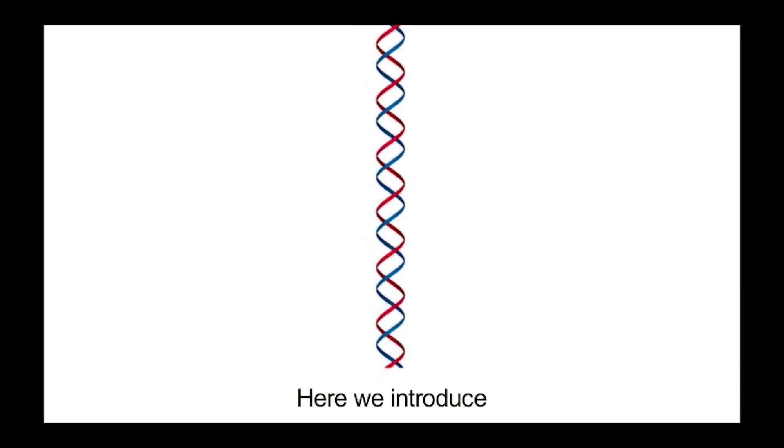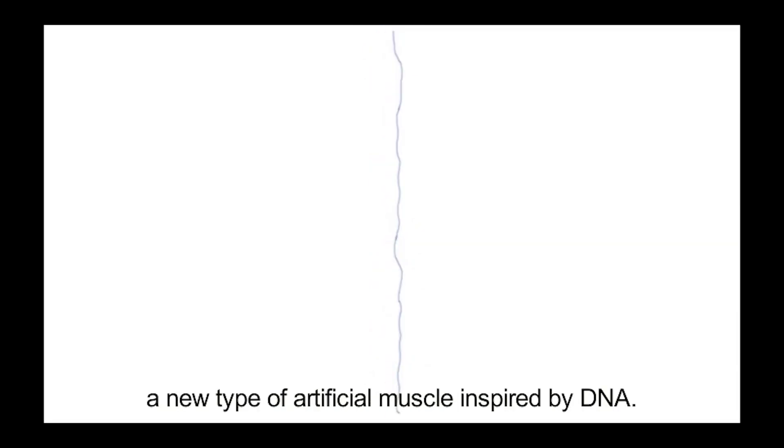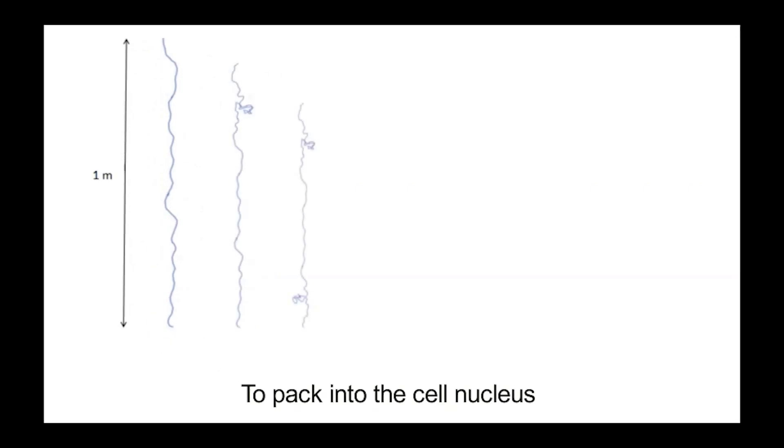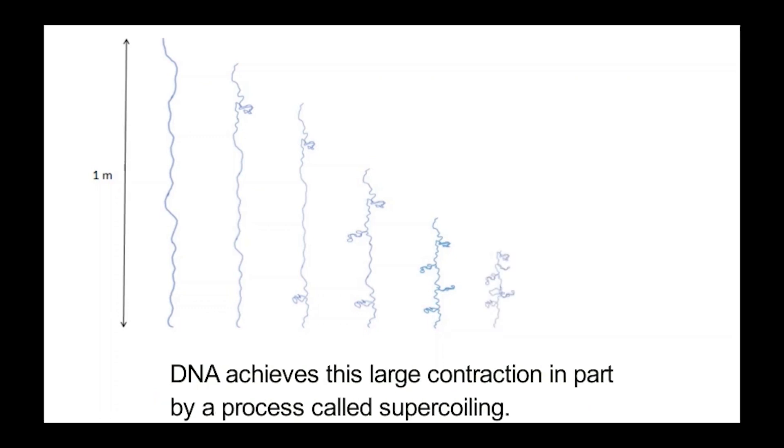Here we introduce a new type of artificial muscle inspired by DNA. To pack into the cell nucleus, DNA must contract by more than 1000 times. DNA achieves this large contraction in part by a process called supercoiling.